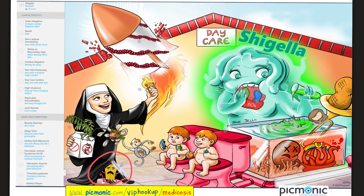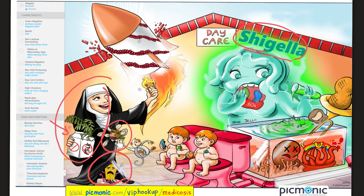Final review: Shigella is a gram-negative rod, non-lactose fermenter (white on MacConkey), oxidase negative. For Shigella, everything is 'no' — not gram positive, doesn't ferment lactose, not oxidase positive, doesn't produce hydrogen sulfide. Remember bloody diarrhea in a daycare context, high virulence, replicates intracellularly using actin rockets. Shiga toxin inhibits the 60S ribosomal subunit. Classic triad of HUS: microangiopathic hemolytic anemia, thrombocytopenia, and renal failure.